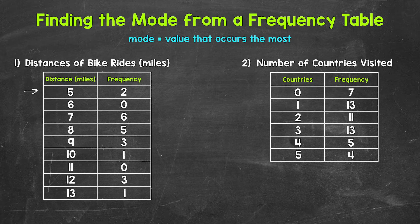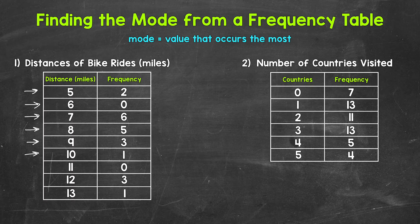5 miles occurred twice. 6 miles occurred 0 times. 7 miles occurred 6 times. 8 miles occurred 5 times. 9 miles occurred 3 times. 10 miles occurred once. 11 miles occurred 0 times. 12 miles occurred 3 times. And 13 miles occurred once.